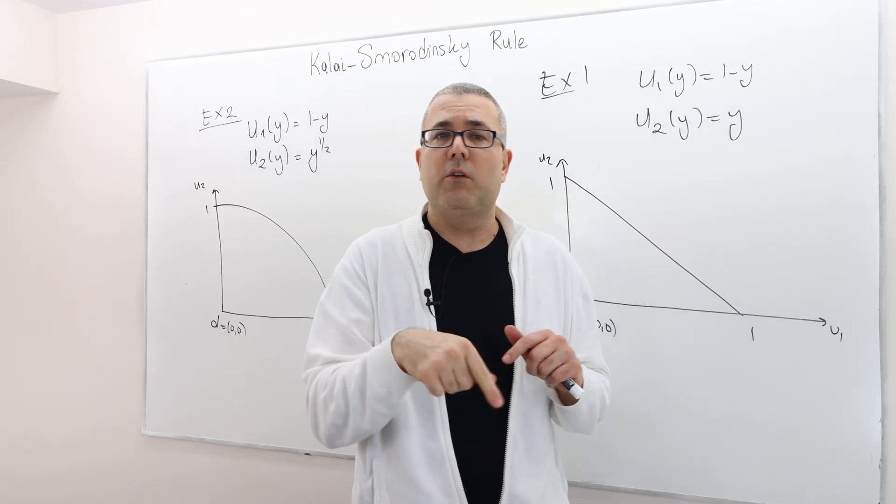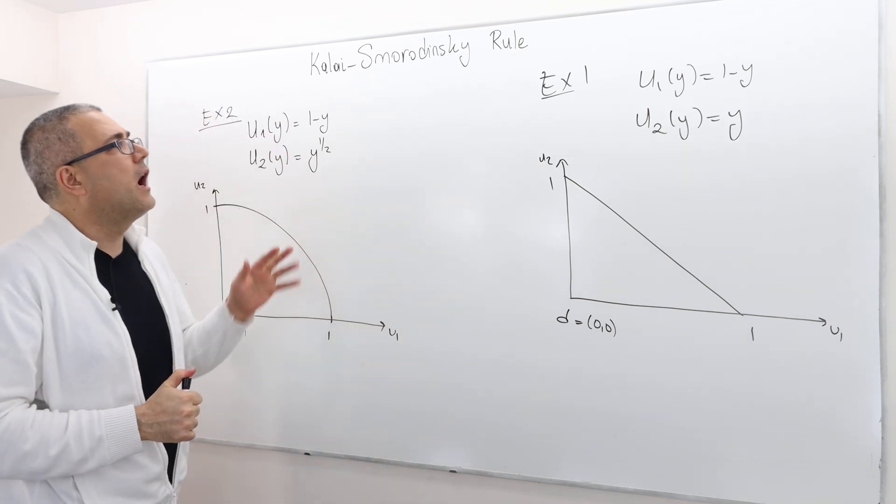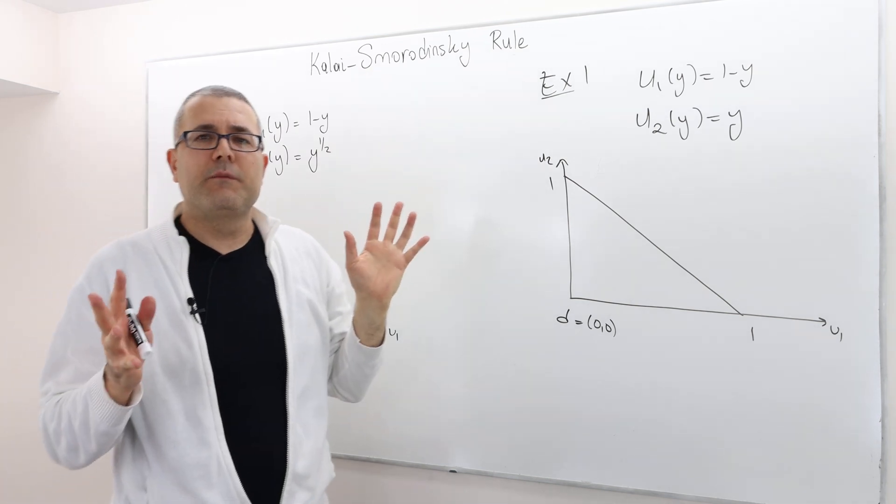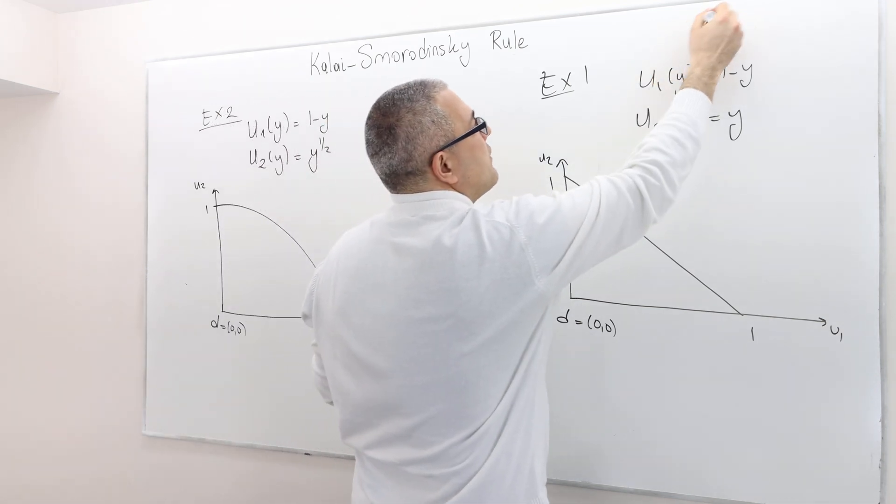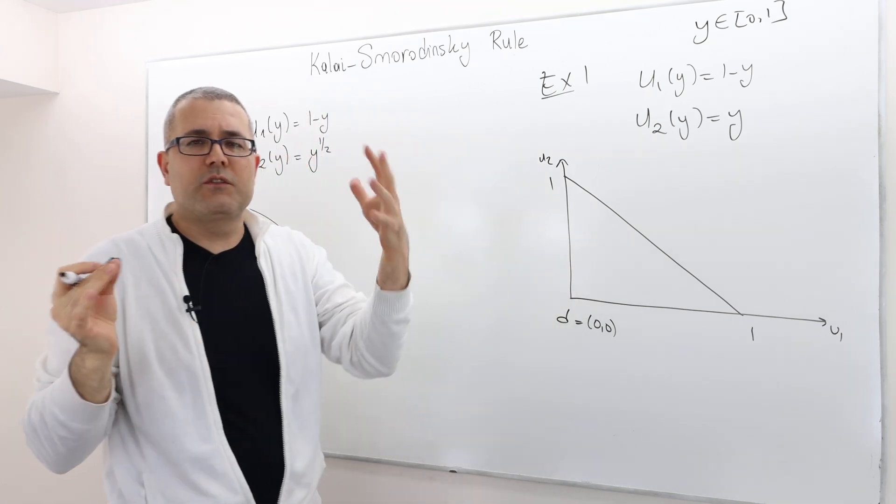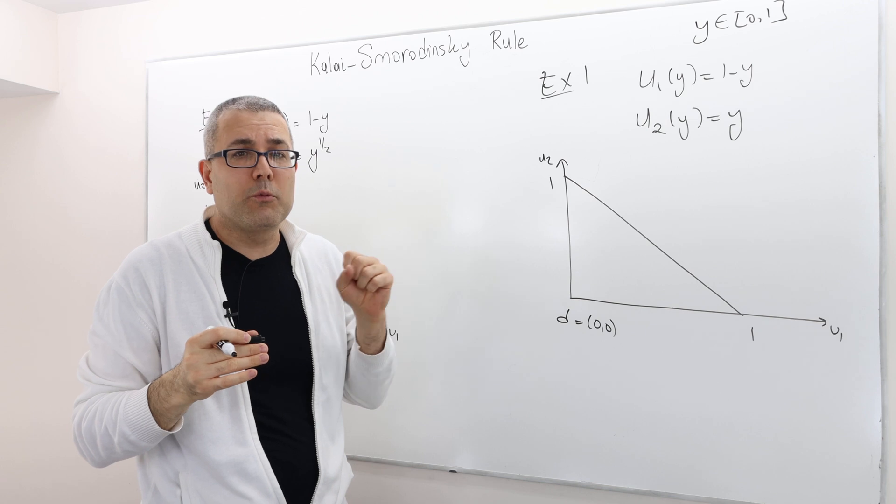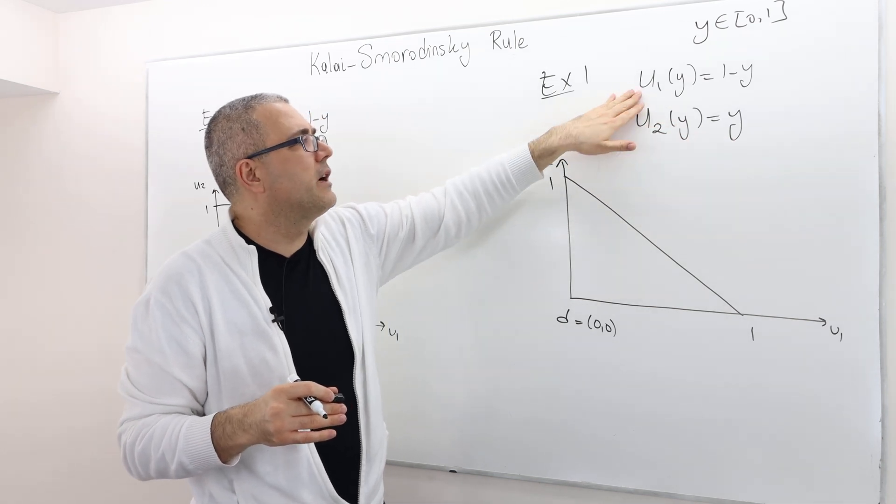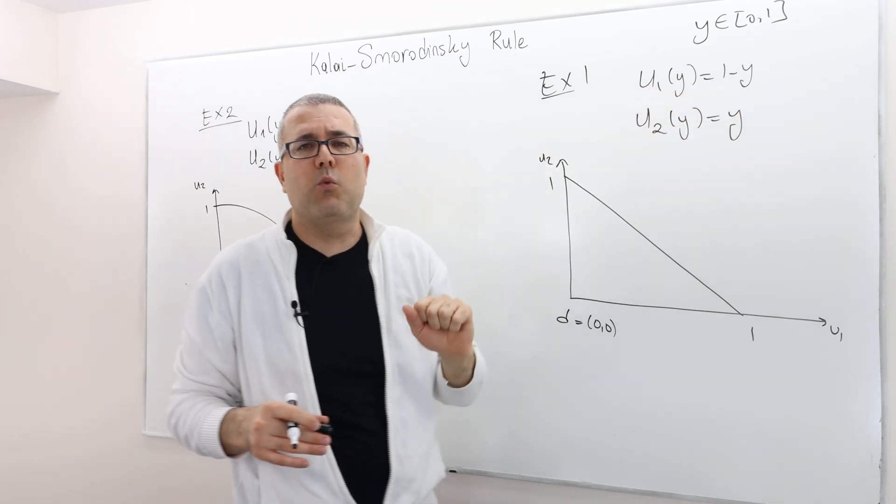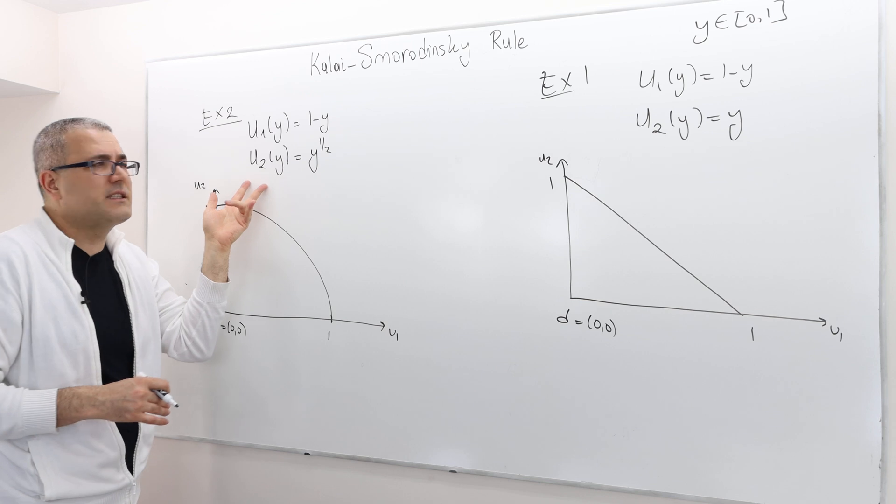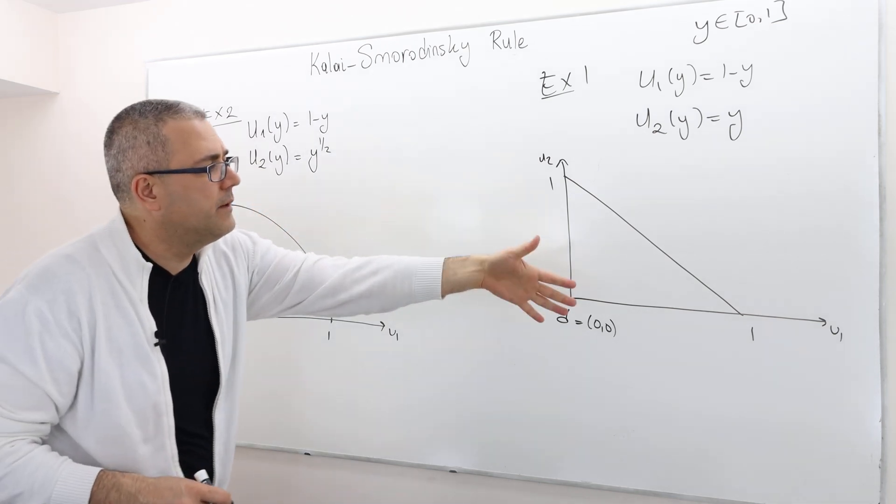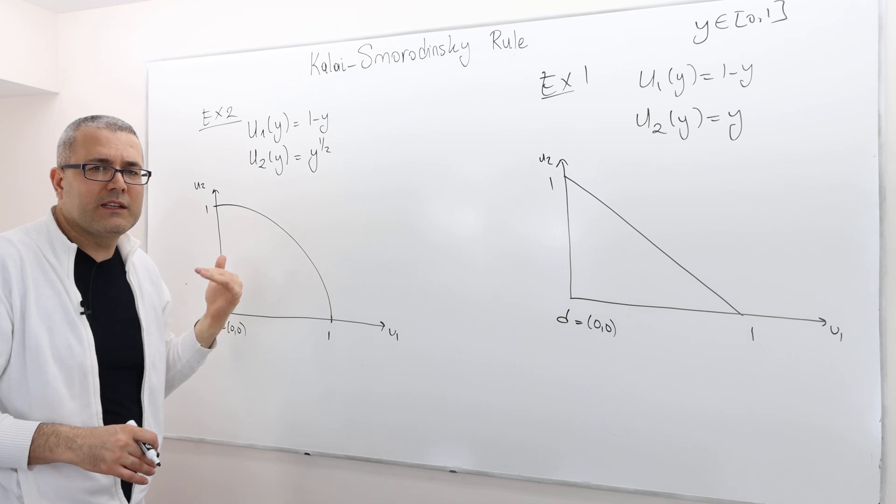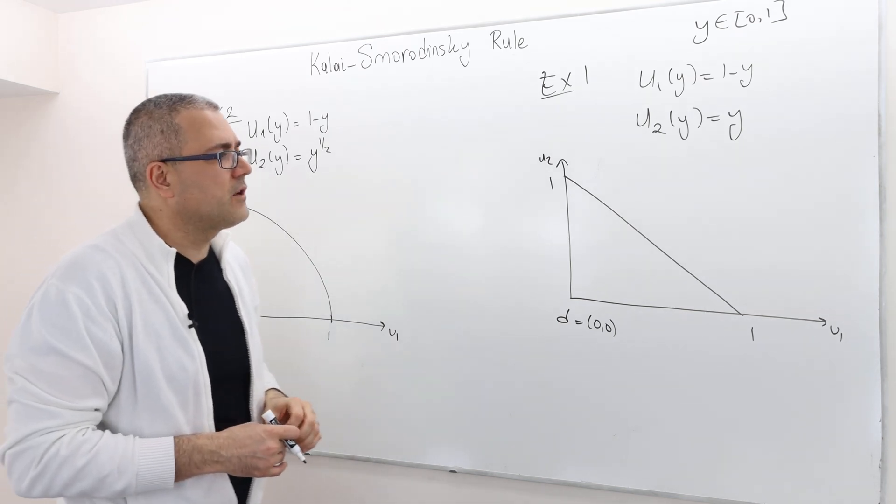Now let's solve these two examples we already solved for Nash bargaining rule with Kalai-Smorodinsky rule. This is the first example. Remember, these two negotiators are trying to share the surplus Y, which is between 0 and 1. They're trying to split a cake of size normalized to 1. If the surplus Y is what player 2 gets, his utility is Y, and player 1 gets the remaining surplus 1 minus Y, and his utility is also 1 minus Y. Both players are risk neutral. In the second example, player 2 is risk averse. This is the bargaining set in the first example. This is the bargaining set in the second example. We derived those bargaining sets in previous lectures.